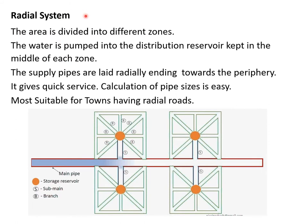In the radial system, the entire city area is divided into different zones, and water is pumped into a distribution reservoir kept in the middle of each zone. Supply pipes are laid radially outward toward the periphery, where a loop pipe connects them. It gives quick service, pipe size calculation is easy, and it is most suitable for towns with radial roads. Unlike the dead-end system, the ends of the radial supply lines are connected with a pipe, so there are no dead ends.